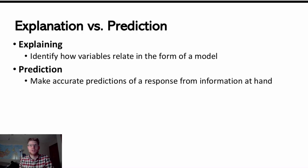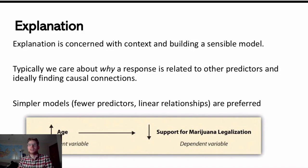The first being explaining where our interest is in identifying how variables relate in the form of a model, caring about the why and how these relationships depend on one another. Whereas prediction is more concerned with just making accurate predictions of a response from information at hand, not necessarily as concerned with why the variables relate as much as we want to use the predictive power it offers.